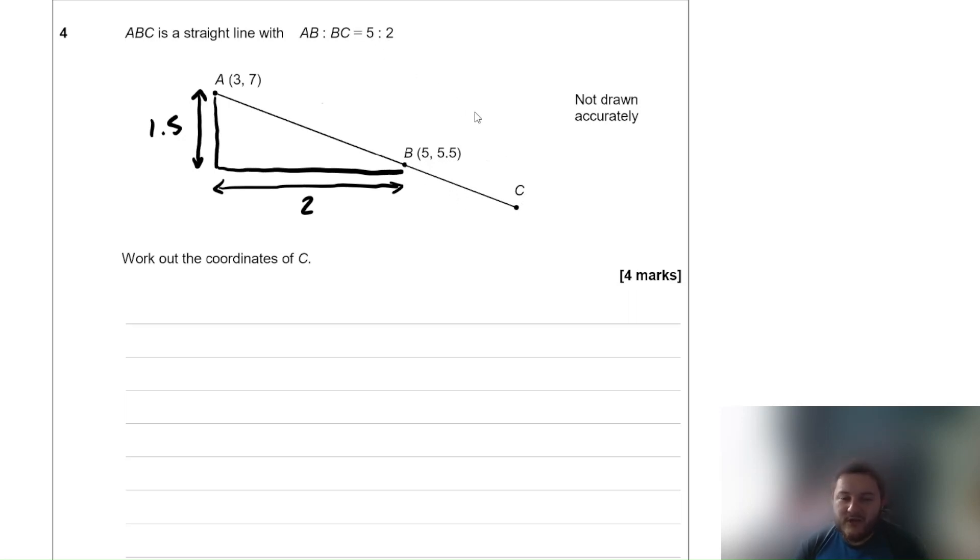So because we know it goes across 2 and down 1.5 between A and B, well between B and C, because of the ratio that we've been given, that is going to be 2 fifths of the distances between A and B. Because it's in the ratio 2 to 5. So it means that between B and C, it's going to go across 2 times 2 fifths, and it's going to go down 2 fifths times 1.5. So that means between B and C, it's going to go across 4 fifths. So it's going to go from 5 across 4 fifths to C. That means the x coordinate must be 5 plus 4 fifths, which is equal to 5.8 as a decimal.